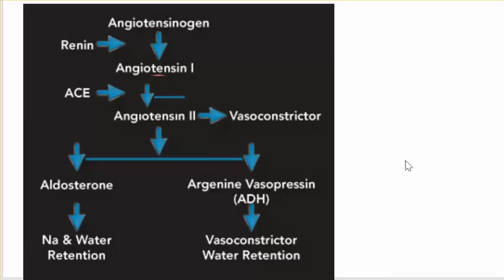One homeostatic mechanism in our body is the RAAS system — R-A-A-S — and this is the renin-angiotensin system.